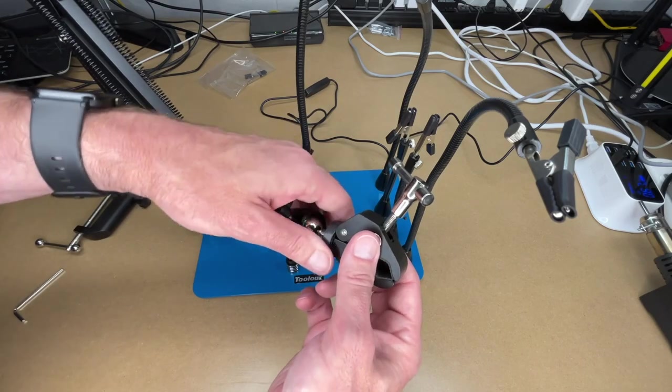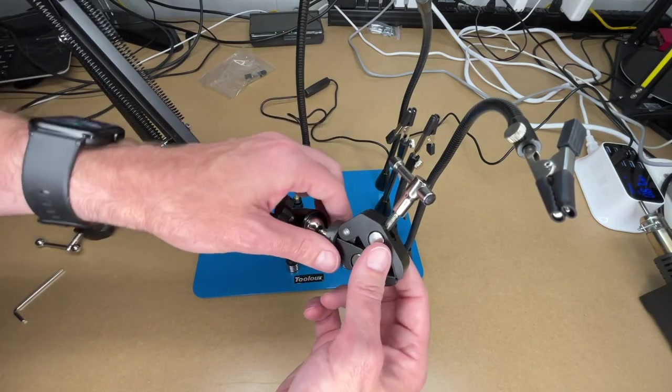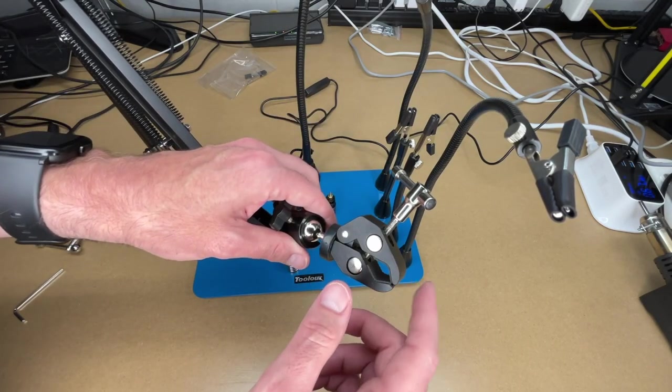Now, if this rotates a little bit, you can rotate against this locking ring to tighten up against that thread, and that will keep that from rotating.